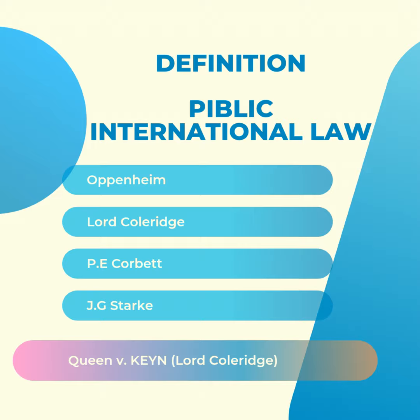Thank you. In this session we discussed the definitions of public international law and the two theories and who propounded them, though we have not discussed the theories in detail — that will be in the next session. We also looked into the reasons why there was a necessity for the change in definition. What we covered was: Oppenheim's definition, its criticism, then P.E. Corbett, and then the present scenario with J.G. Stark, and the case law Queen vs King. Thank you for listening, I hope it helps, and have a nice day.